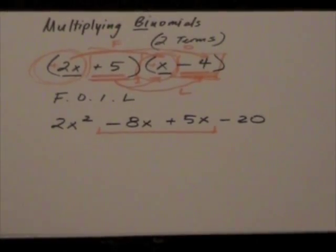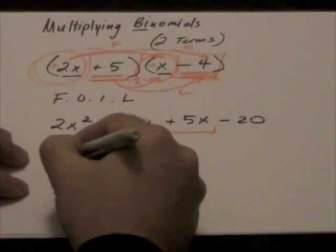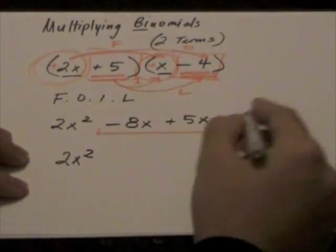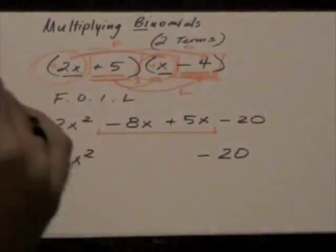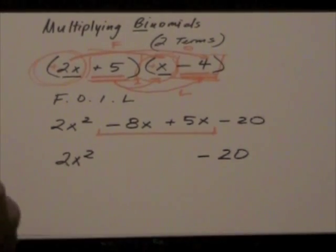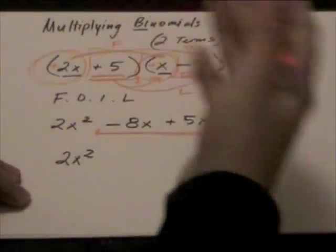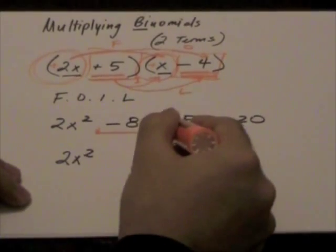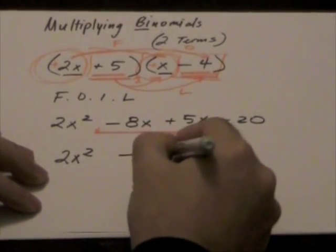So, we have here 2x squared. There are no other like terms in this expression, so we just keep 2x squared. This negative 20, there are no other like terms with the negative 20, so we keep the negative 20 as is. The only thing that's left is a negative 5x. And notice how I'm treating the negative or the minus 8x as a negative. So, we have negative 8x plus 5x, which will give us a simplified value of minus 3x.